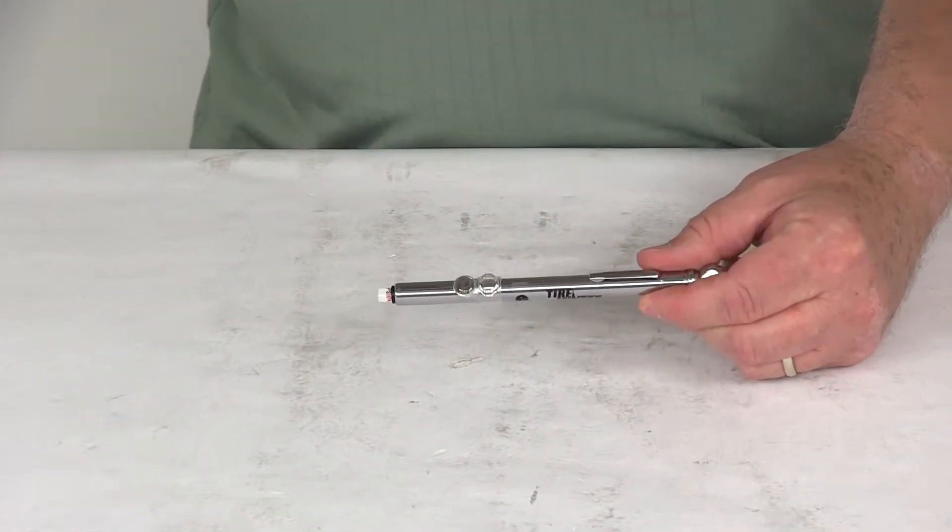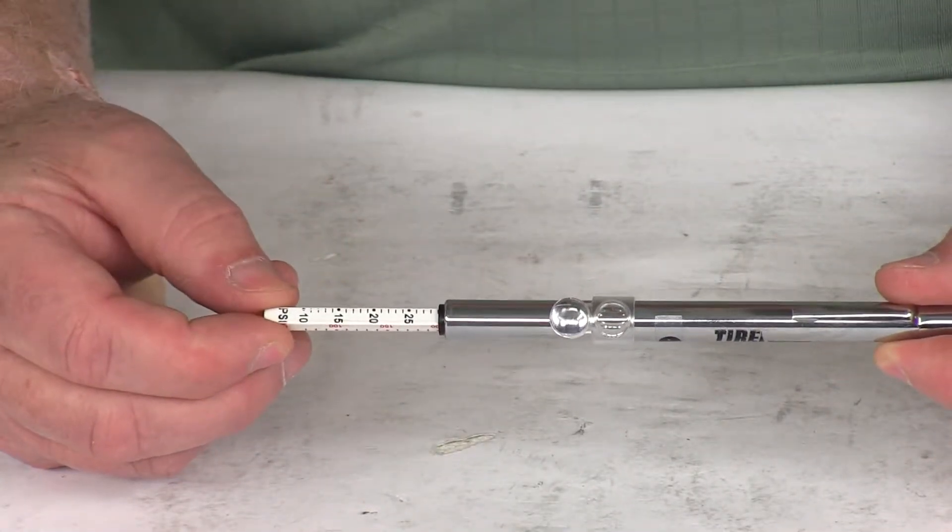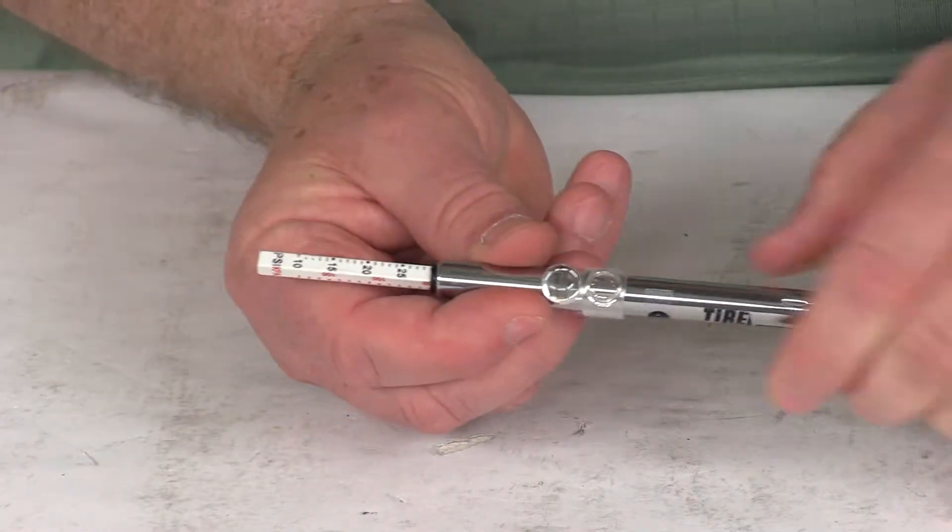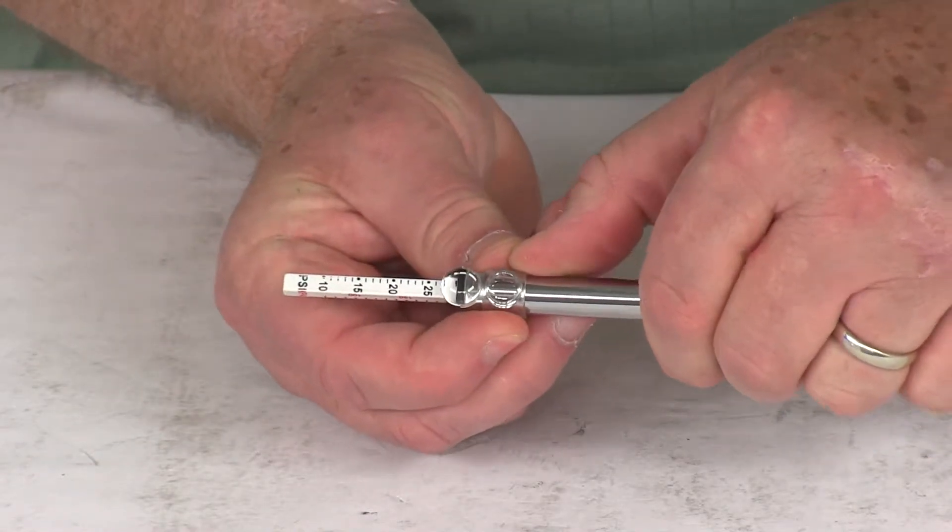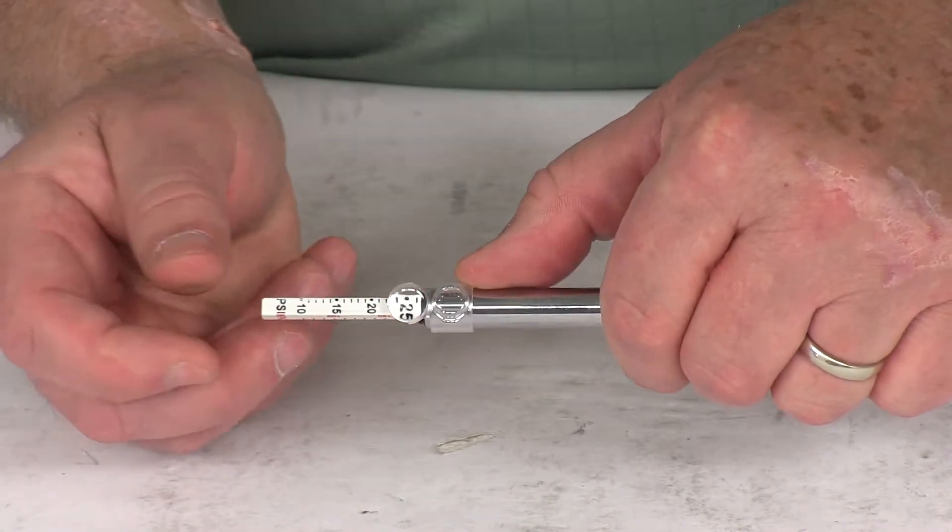I'm going to zoom in a little bit here and show you that when you put this on the valve and it shows your pressure, sometimes it's hard to read. If you just take this 2x magnifier and slide it over, you can see the numbers a lot better.